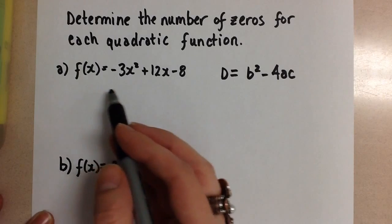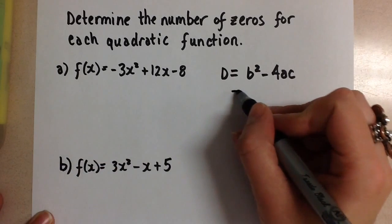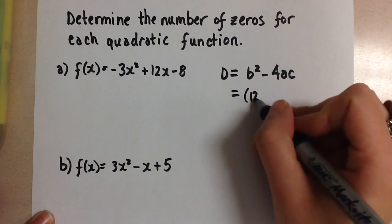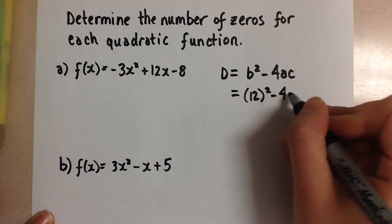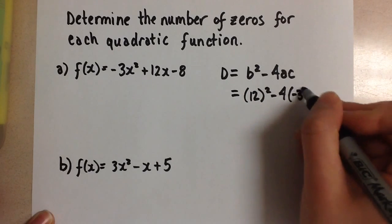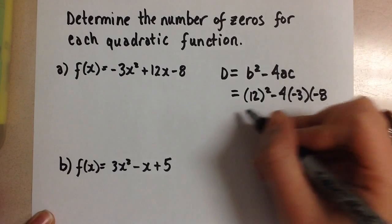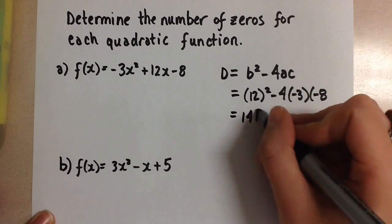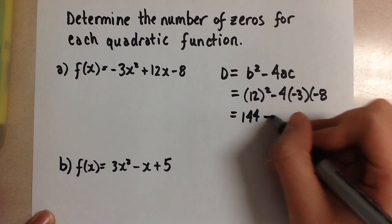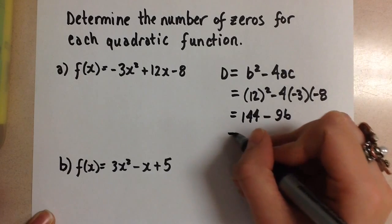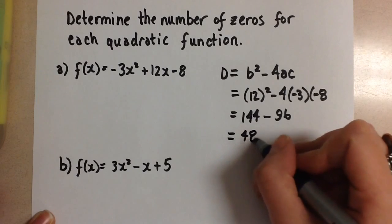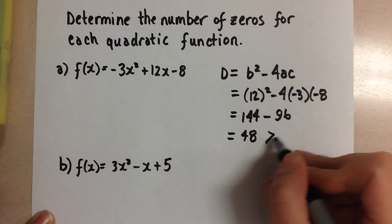So for the first function here, when we fill in the values in the discriminant, we're going to get 12 squared minus 4 times negative 3 times negative 8. When we evaluate this, we get 144 minus 96. And the value of the discriminant here is 48, which is greater than 0.